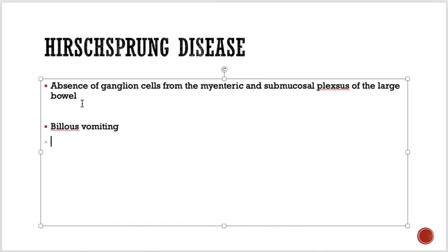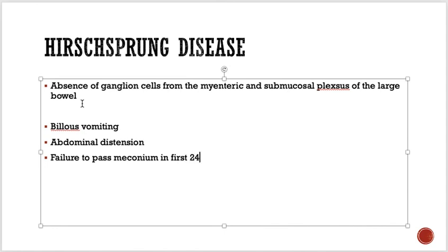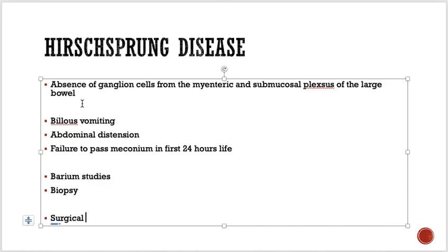Management of Hirschsprung disease is always surgical — the aganglionic segment must be removed and anastomosis is performed with the normal colon. That is all for today. Please go through all these topics from any textbook, and if you don't understand anything, feel free to ask questions.